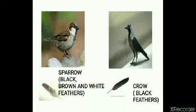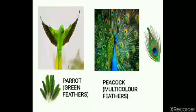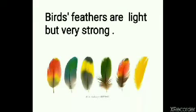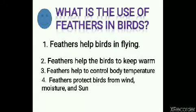Look at the picture of the sparrow here. A sparrow has black, brown and white feathers on its skin, whereas a crow has black feathers on its skin. In a parrot, the feathers are green in color, whereas in a peacock, we can see multicolor feathers. Birds' feathers are light, but they are very strong. What is the use of feathers in birds? Feathers help birds in flying. Feathers also help the birds to keep their body warm and control their body temperature. Feathers protect birds from wind, moisture and sun.